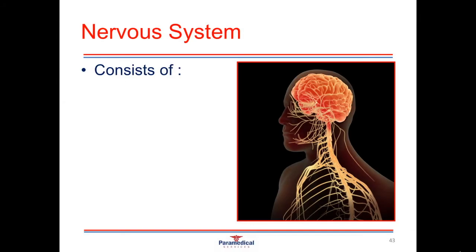Welcome back to the introduction of anatomy and physiology. The next system we're going to be having a look at is the nervous system. The nervous system is made up of trillions of tiny nerve cells called neurons, and these neurons or nerve cells are connected to every other system in the body, and it controls each of these systems.